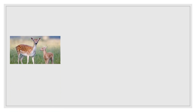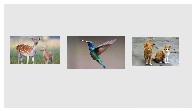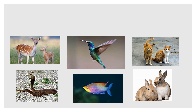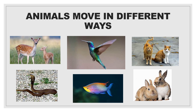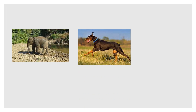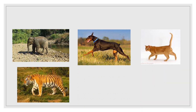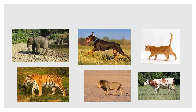Have you seen animals moving around? Look at these animals. Have you seen these animals moving? You find that these animals move in different ways. Observe these animals — elephant, dog, cat, tiger, lion, cow. How do they move from one place to another? By walking. Animals like elephant, dog, cat, tiger, lion and cow walk.